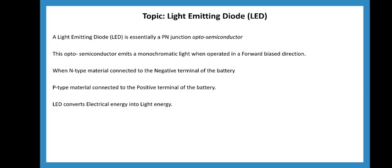A light emitting diode is essentially a PN junction opto semiconductor. This opto semiconductor emits a monochromatic light when operated in forward bias direction. LED is a type of PN junction diode — this is an opto semiconductor. This PN junction diode is in forward bias condition and emits monochromatic light.